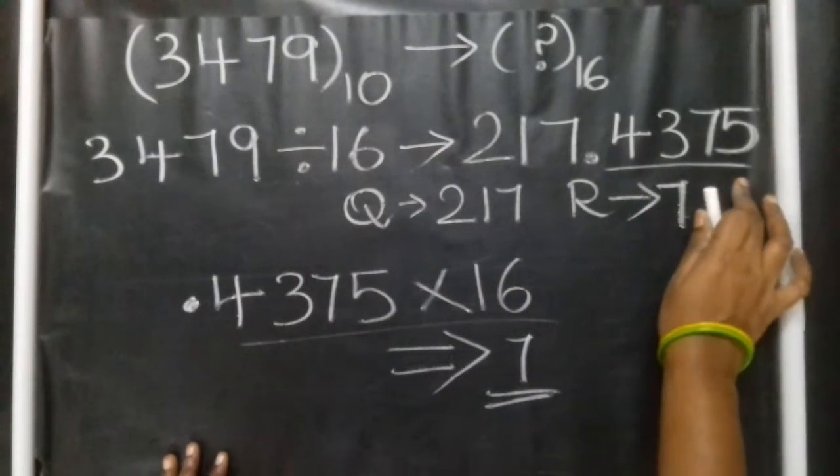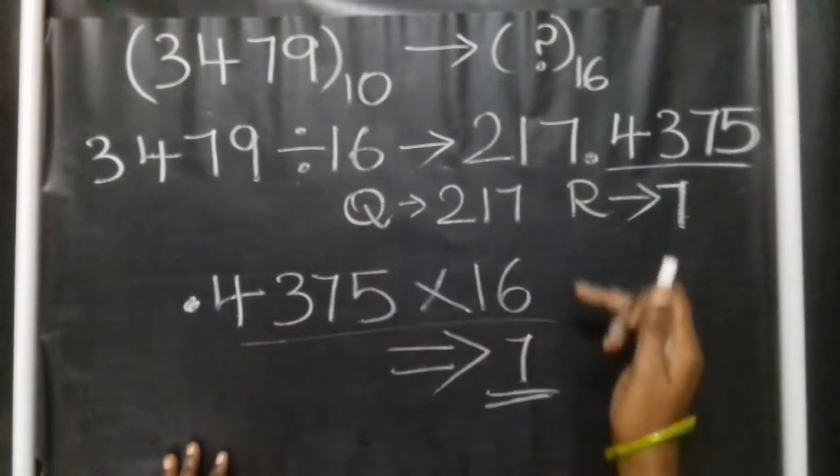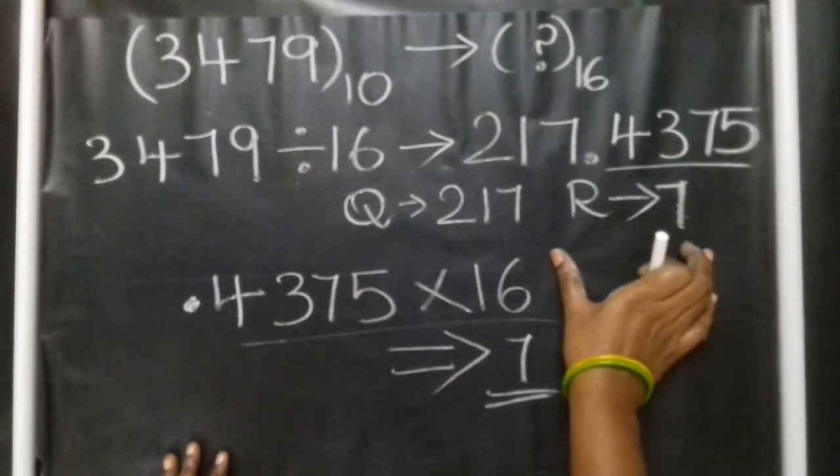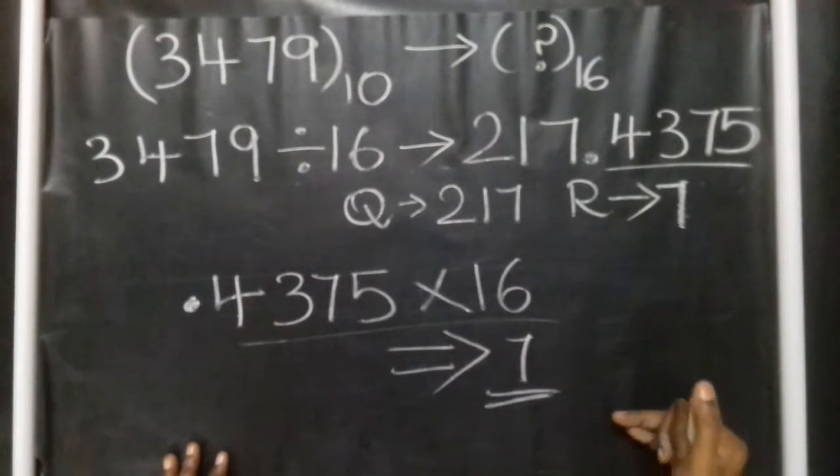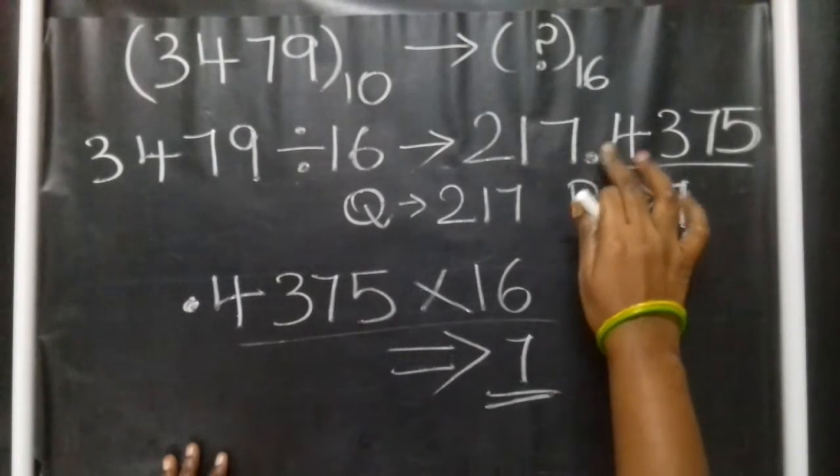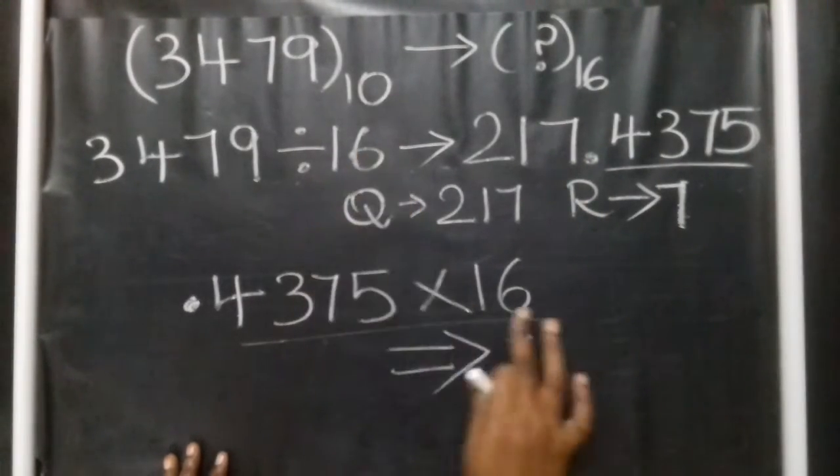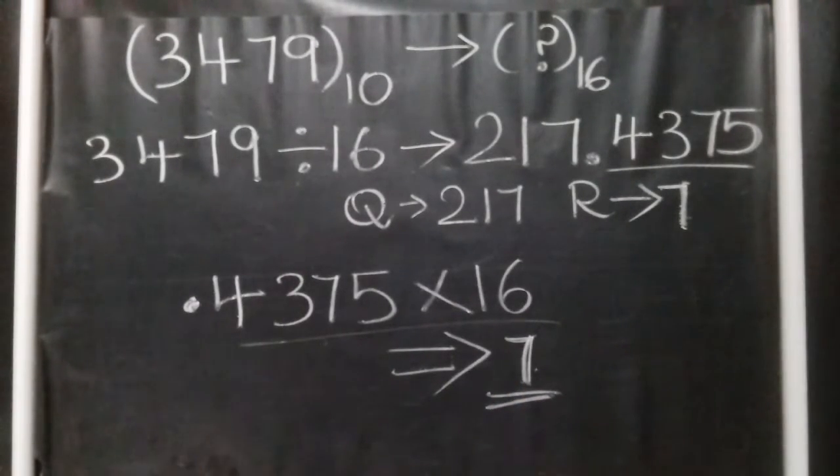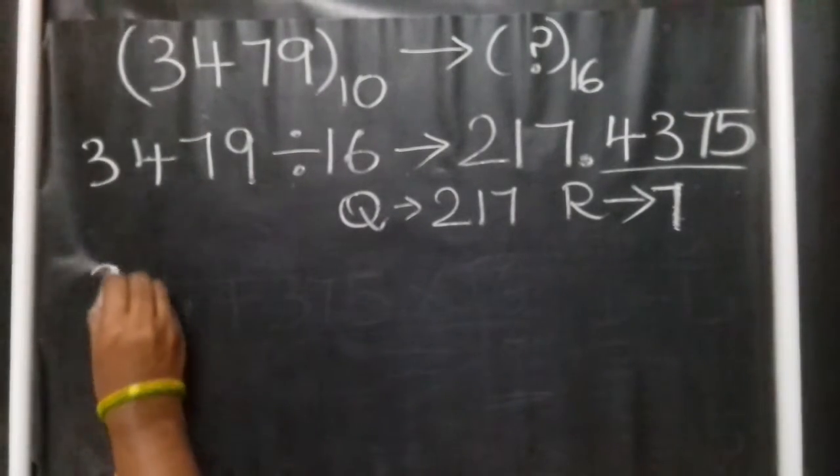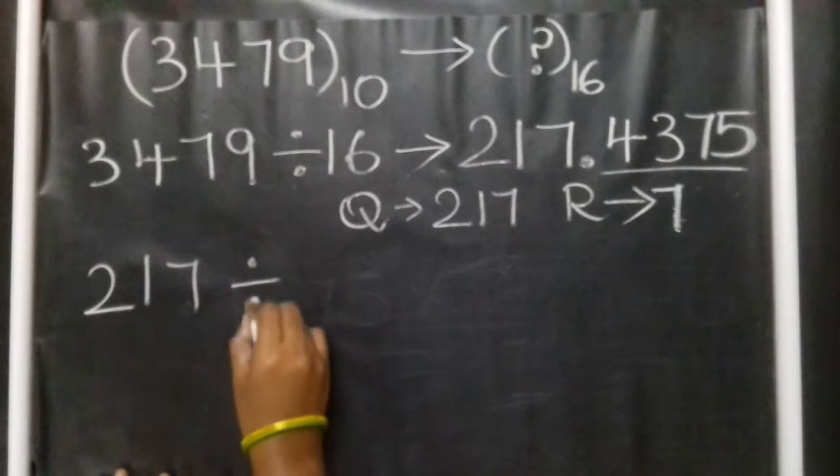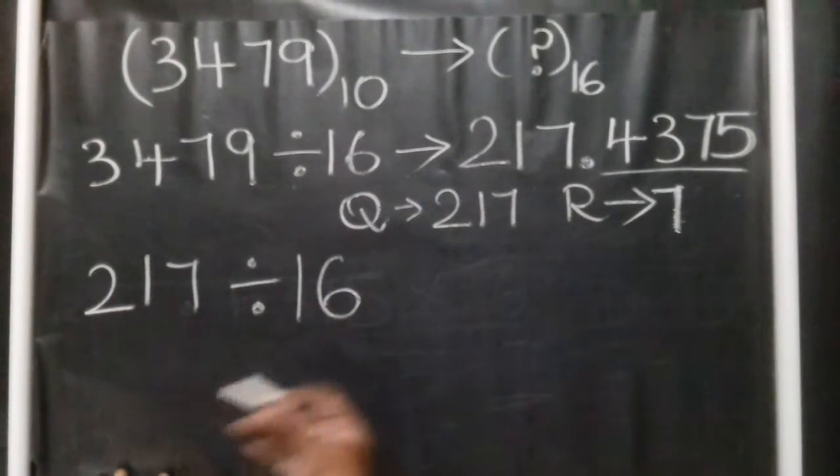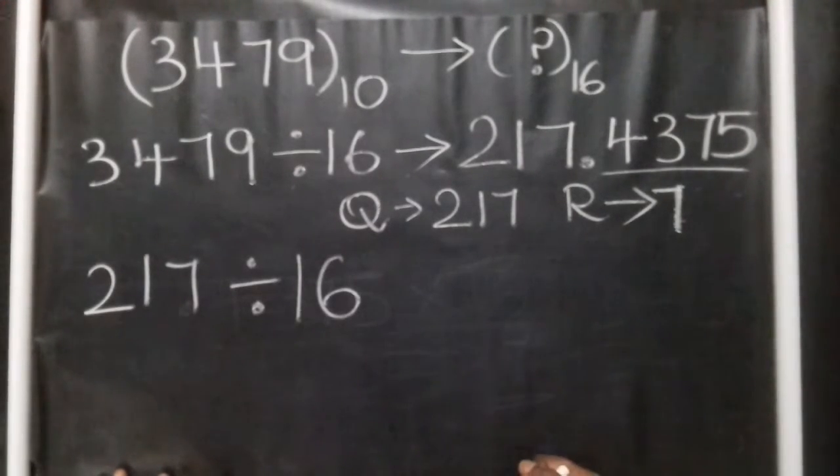For conversion of decimal to hexadecimal, the remainder is the final answer. Repeat this process: divide the decimal number by 16, calculate the remainder.